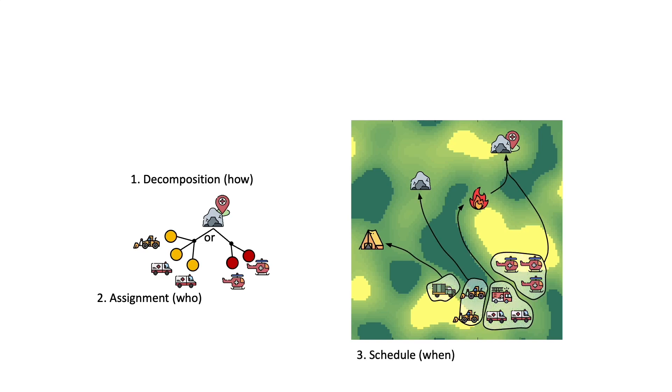There are three fundamental problems in such a coordination. First, how to decompose a task into single-agent roles? Second, which agent should be assigned a specific role? Finally, what routes and schedules to use such that the agents work in a consistent plan?